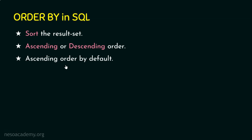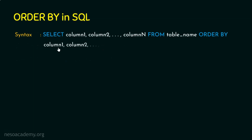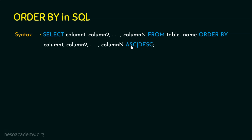Let's see the syntax. The syntax goes like this: SELECT column1, column2, up to column N FROM table_name — this is the general SELECT query. Then ORDER BY column1, column2, up to column N. We need to specify the keyword for which order we want: ASC for ascending, DESC for descending.